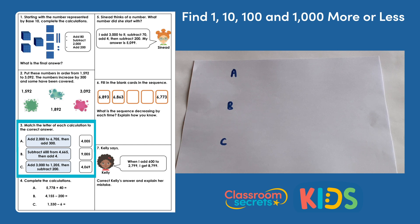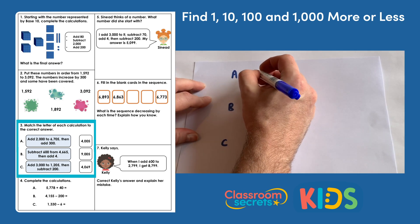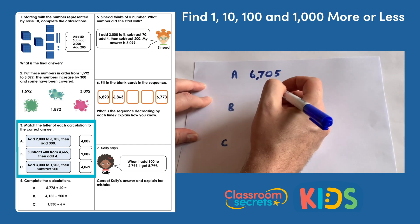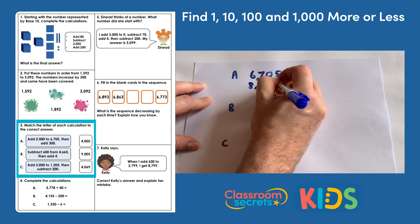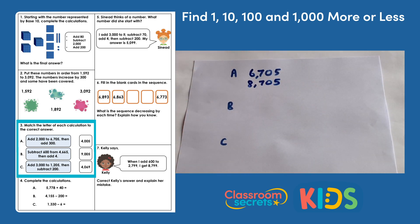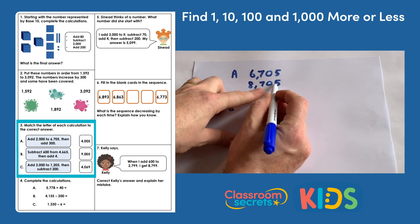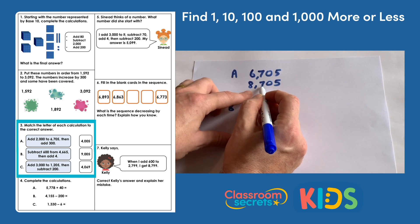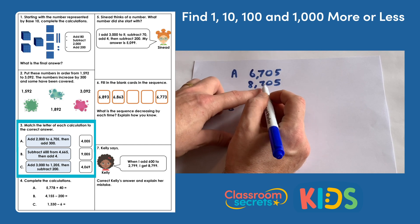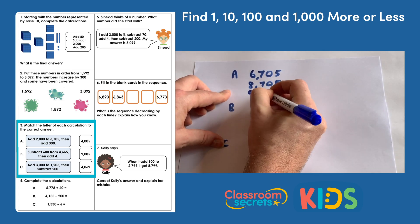For A, we have to add two thousand to six thousand seven hundred and five, and then add three hundred. If we have six thousand seven hundred and five and add two thousand, that gives us eight thousand seven hundred and five. Then we add three hundred — we're only adding hundreds so the tens and ones stay the same. Adding three hundreds onto seven hundreds takes us to the next thousand, so A will be nine thousand and five.